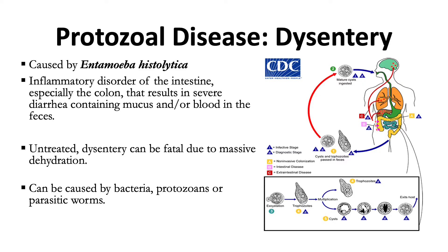The first protozoal disease is dysentery, caused by Entamoeba histolytica. This is an inflammatory disorder of the intestine, especially the colon. When suspecting dysentery, we look for clinical manifestations such as diarrhea containing mucus and/or blood in the feces. If left untreated, dysentery can be fatal due to massive dehydration.